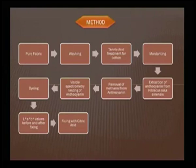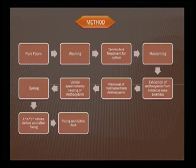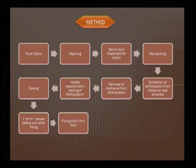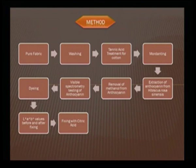The normal methodology is: take a pure fabric, wash it, and subject cotton particularly to tannic acid pretreatment followed by mordanting. We used four mordants: alum, copper sulfate, stannous chloride, and potassium dichromate. The anthocyanin dye was extracted with citric acid solution in methanol, and then the methanol was removed under vacuum so that the color would not be destroyed. We did not heat too much, because overheating such dyes can cause discoloration. We then proceeded to analyze the results.